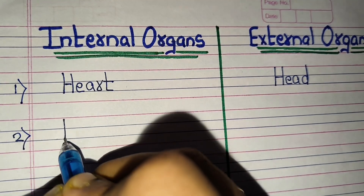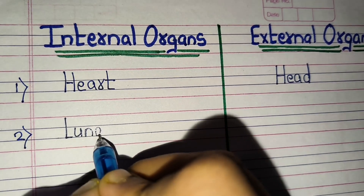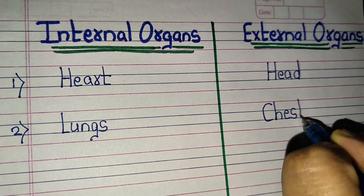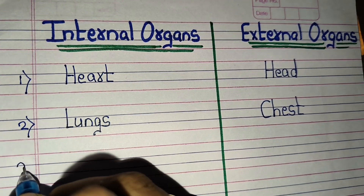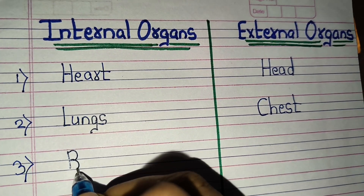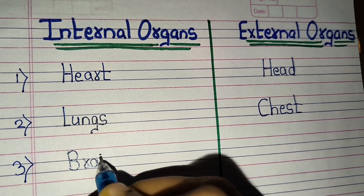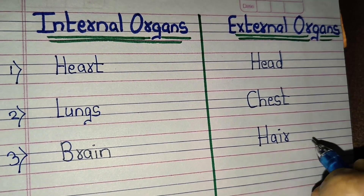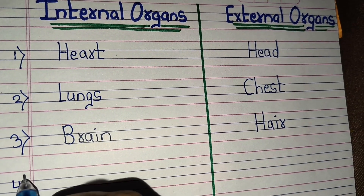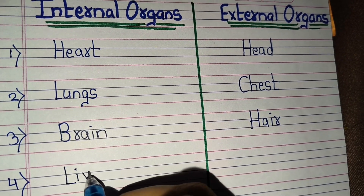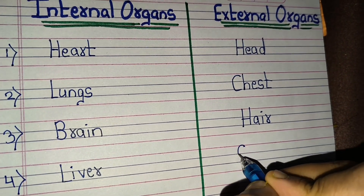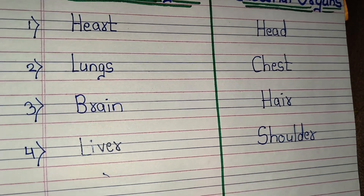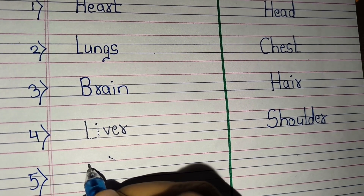External organ: head. Second internal organ: lungs. External organ: chest. Third internal organ: brain. External organ: hair. Fourth internal organ: liver. External organ: shoulder.